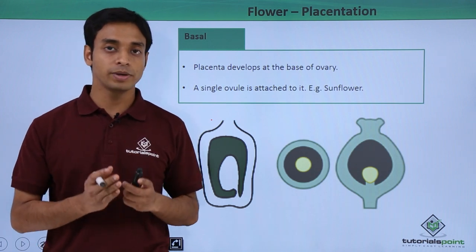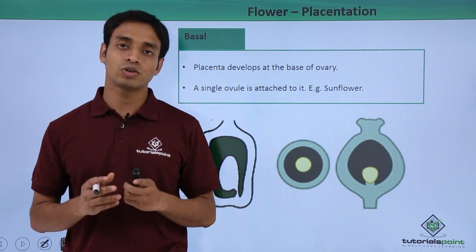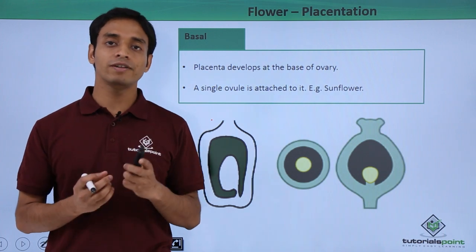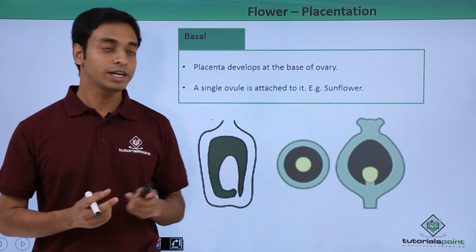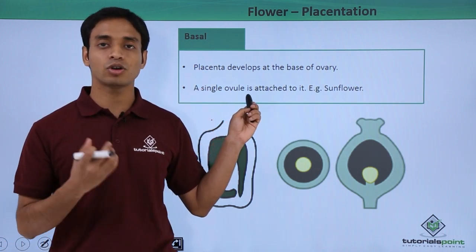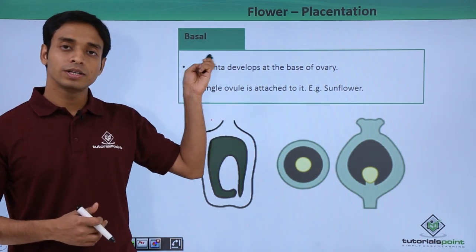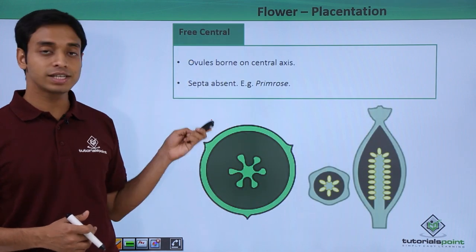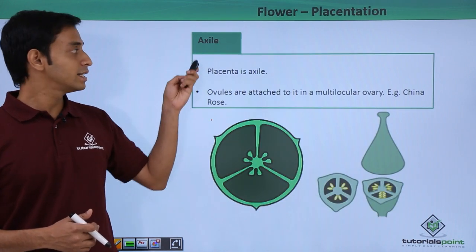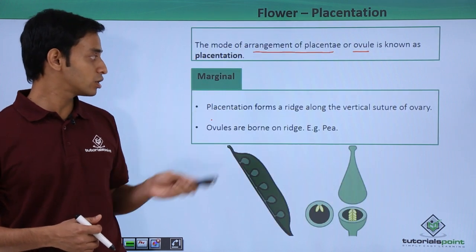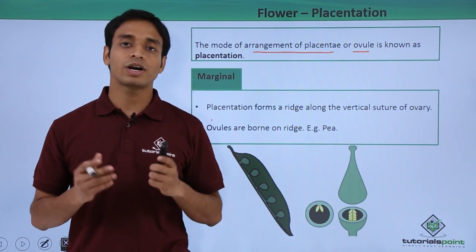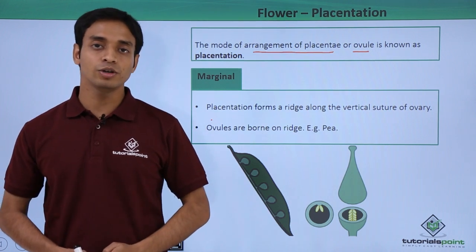In this video we talked about placentation — the mode of arrangement of ovules inside the ovary. The types discussed are: marginal placentation (pea), axile placentation (china rose), parietal placentation (mustard), free central placentation (primrose), and basal placentation (sunflower). I hope you understood and liked this video. Thank you.